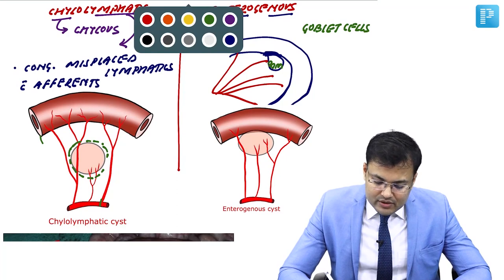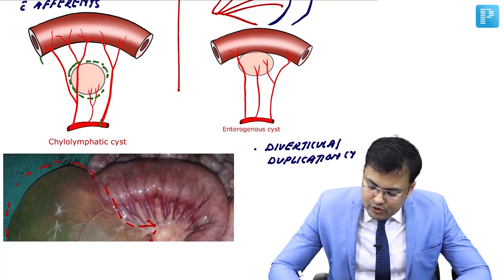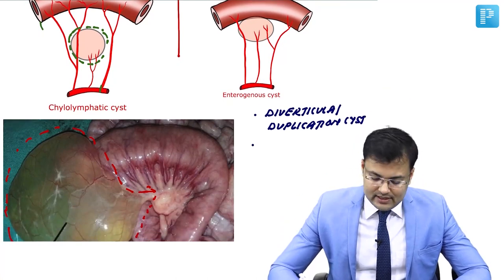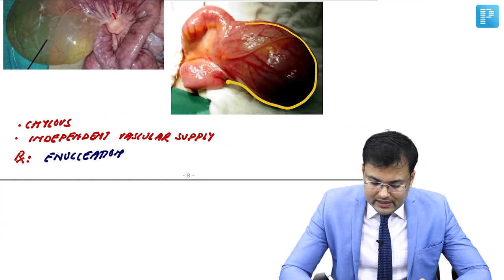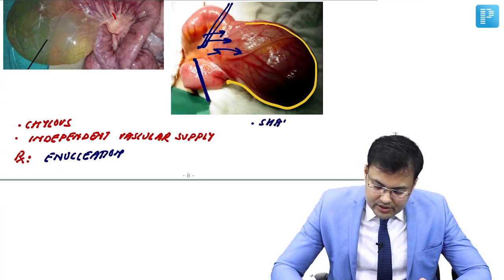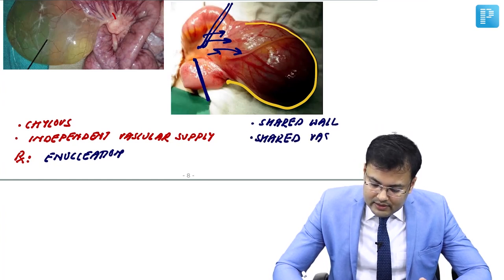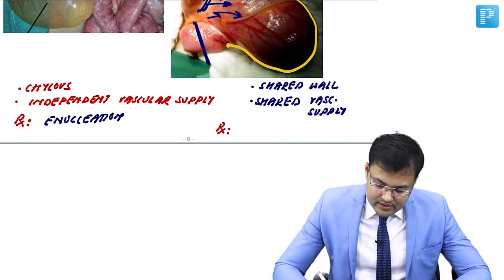Important points related to enterogenous cyst: it arises from either diverticula or duplication cyst in relation to small intestine. The content is mucinous. The wall is shared and simultaneously there is shared vascular supply — that's why in these cases we perform resection and anastomosis. Since there is shared wall and shared vascular supply, the treatment is resection and anastomosis.